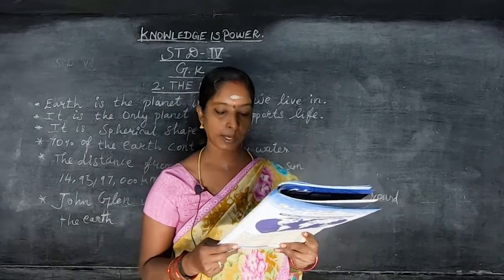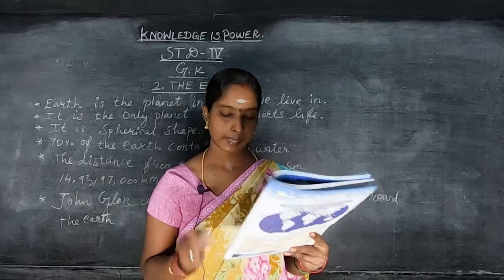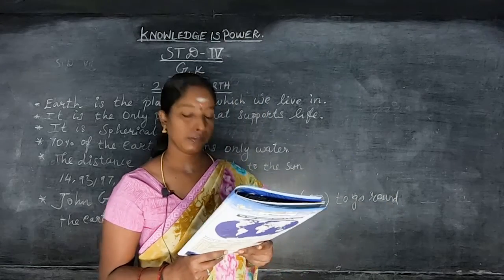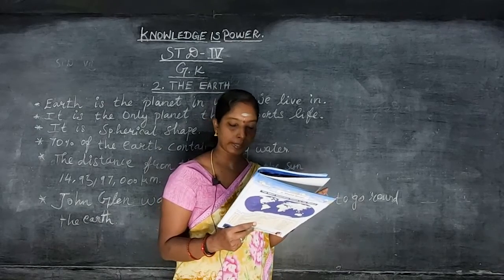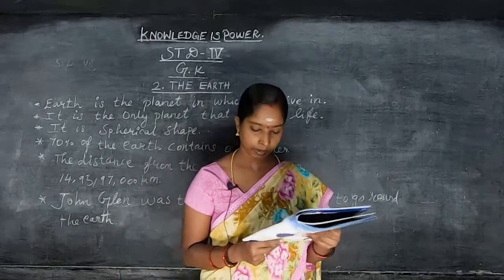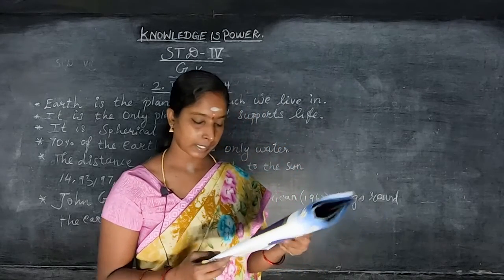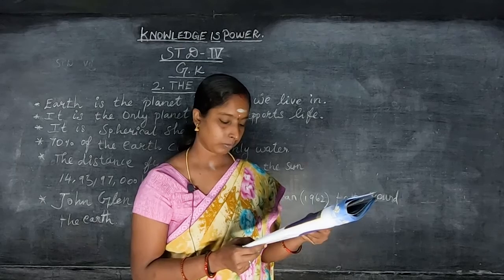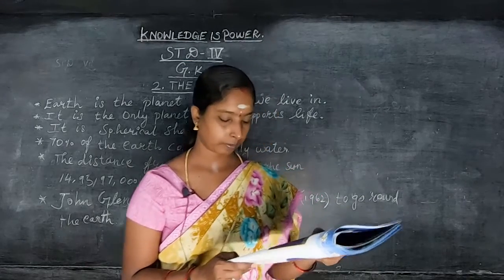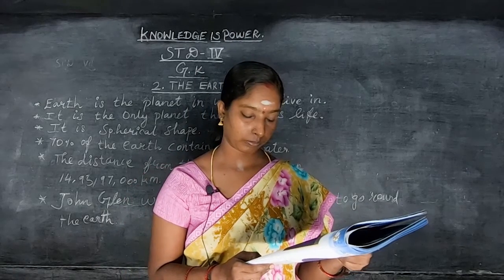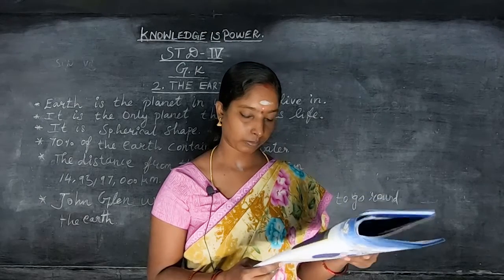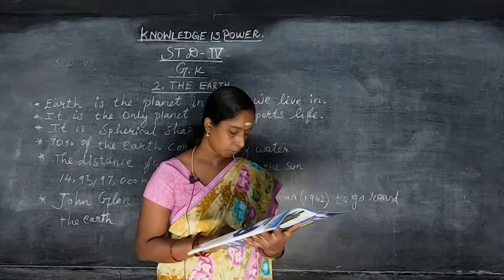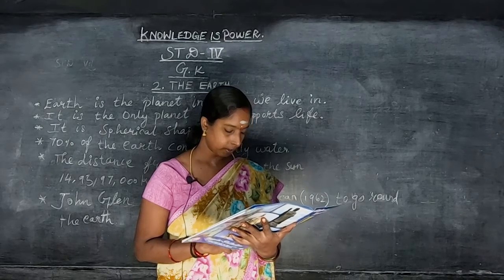Its atmosphere contains 78% of nitrogen, 21% of oxygen and 1% of argon. The deepest point on the earth is the Challenger Deep in the Mariana Trench.